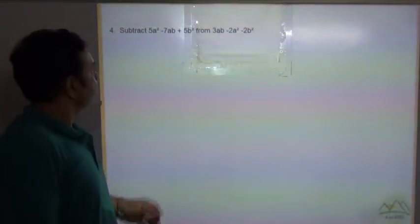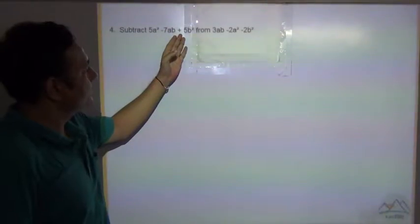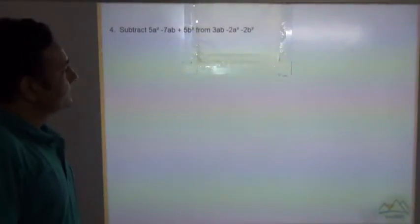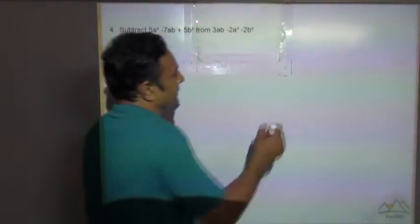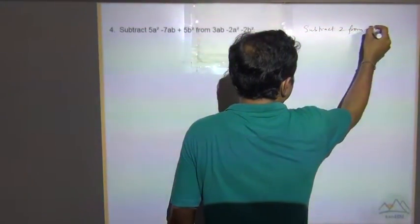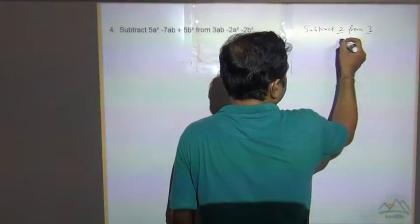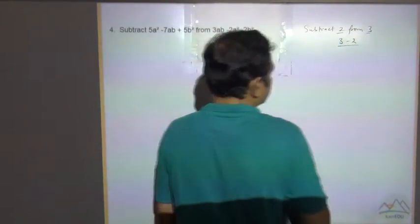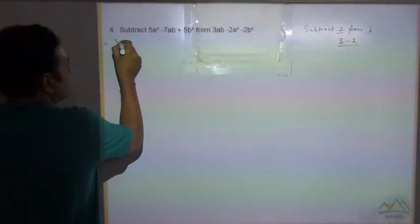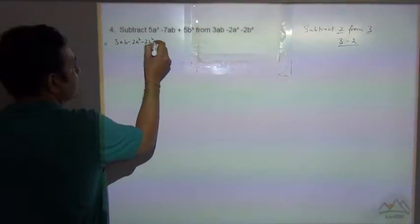Question number 4: subtract the expression 5a² minus 7ab plus 5b² from 3ab minus 2a² minus 2b². To understand this, if we have to subtract 2 from 3, it means 3 minus 2. Similarly, here we have to subtract the first expression from the second, so it means 3ab minus 2a² minus 2b² minus the whole first expression.